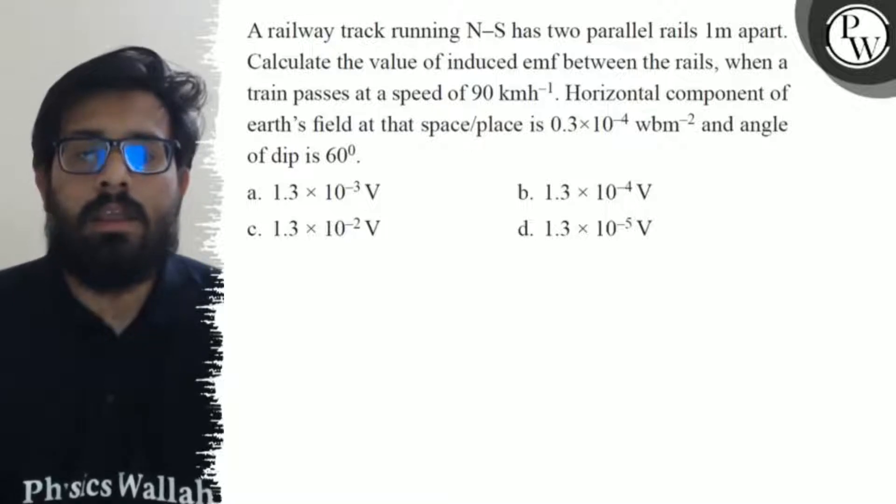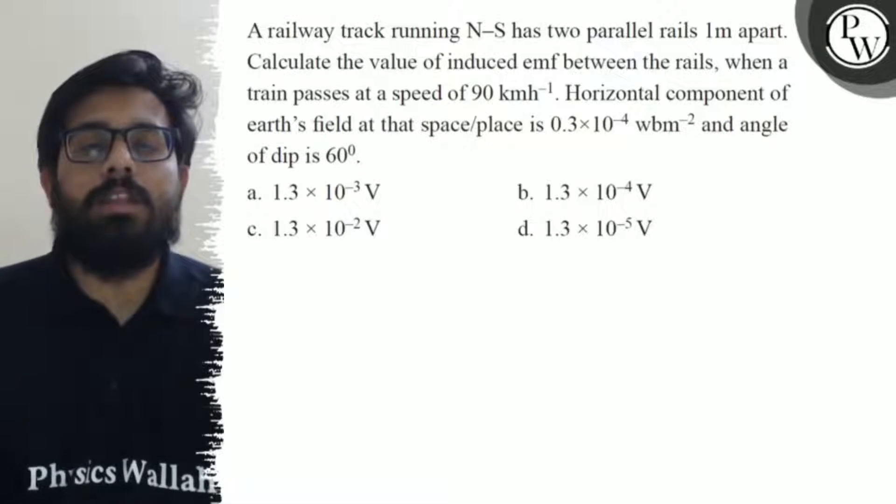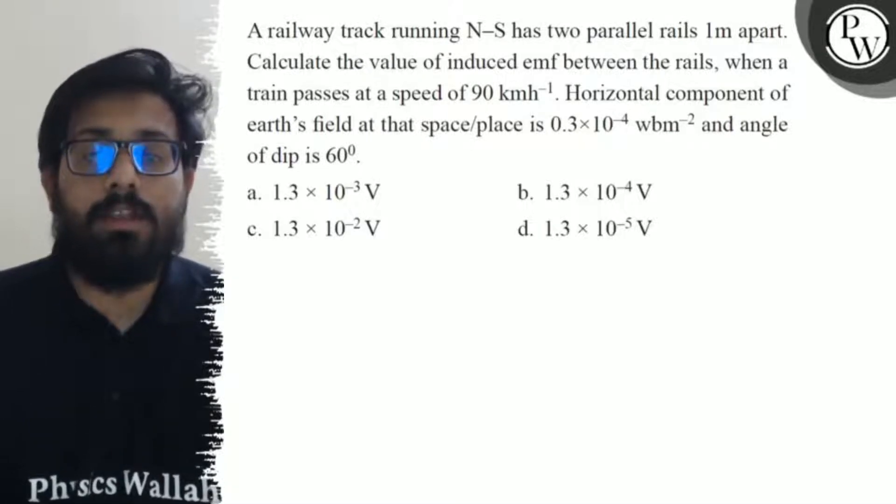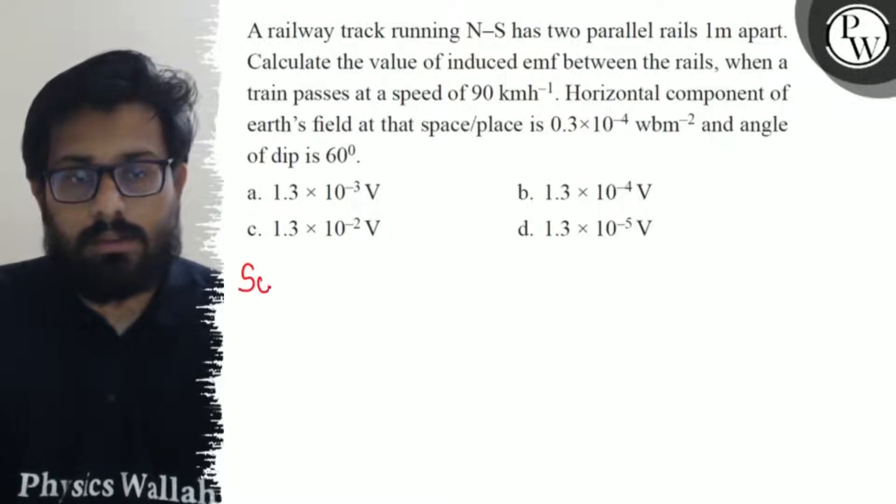Your third option is 1.3×10⁻² volt and your fourth option is 1.3×10⁻⁵ volt. So here in this question, we have a railway track.